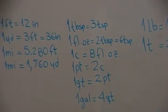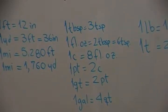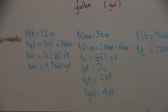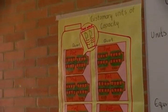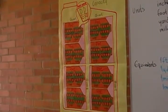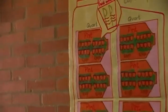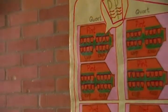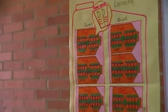On this side, we can see that these conversion factors for capacity are related to this chart. The big drawing is a gallon. Each gallon has four quarts, which are the pink ones.